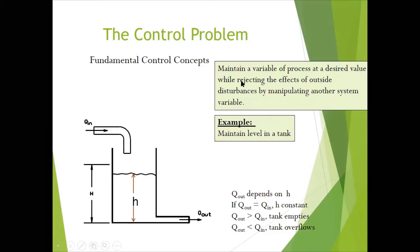Here we don't have any control instrument or device for this particular system. Q-out depends on H — the quantity of water at the outlet depends on the present height of the water level. If Q-out equals Q-in, height h is constant. Note that small letter h and capital H are different — capital H is the level you need to maintain, while small h indicates the actual level. If output equals input, the water level remains constant; if output is more, the tank empties; if output is less, the tank overflows.